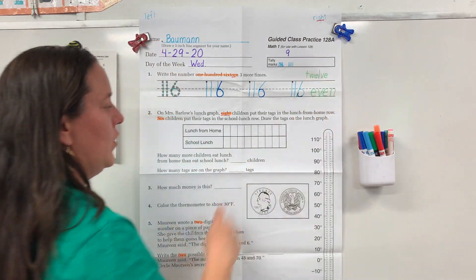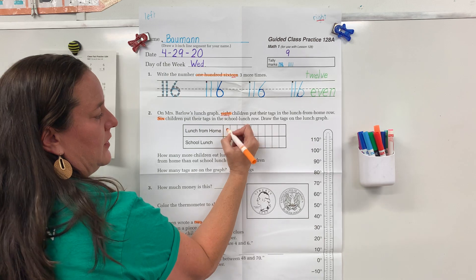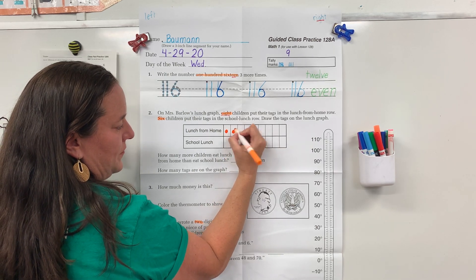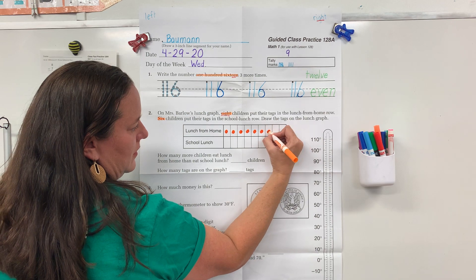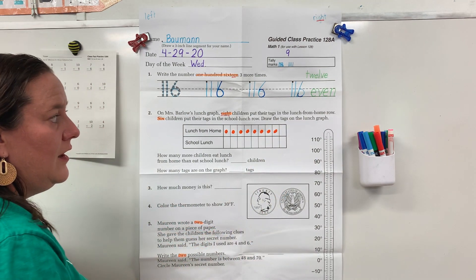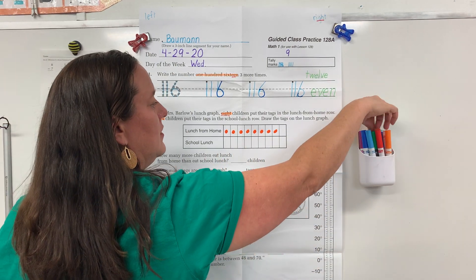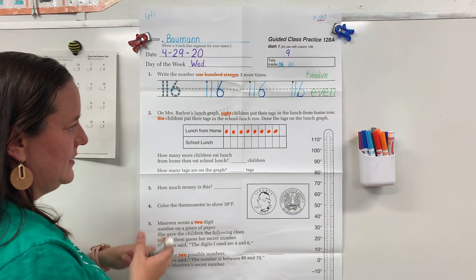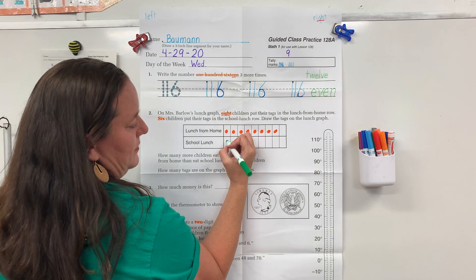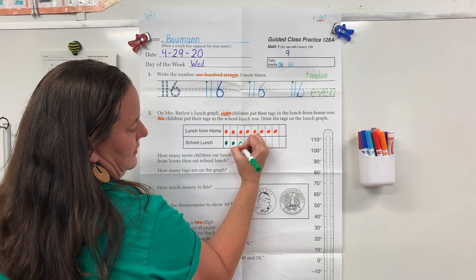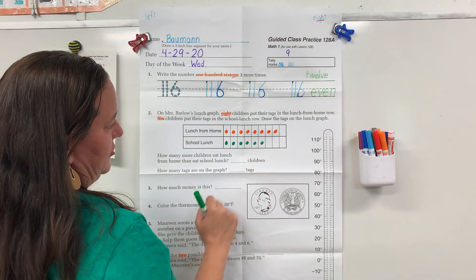Let's do orange for lunch from home. 8 children put their tags on the lunch from home graph, so let's do 8. Remember that a smart student would go back and count to make sure they have 8. Let's get a different color — how about some green? 6 children put their tags in the school lunch row. Let's do 6. A smart student would go back and count to make sure they have 6.